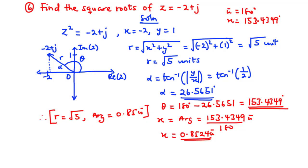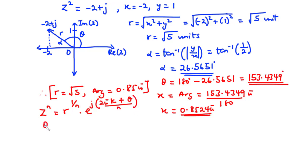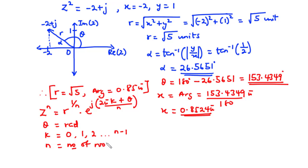We are going to use these two values to find the roots of the complex number using the formula: z^n = r^(1/n) × e^(j(2πk + θ)/n), where theta is in radians, k are non-negative integers from 0 to n−1, and n is the number of roots. Since we have z to the power 2, we have n equals 2, so we will get two roots: z1 and z2.